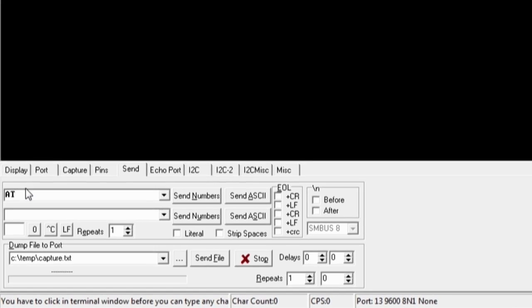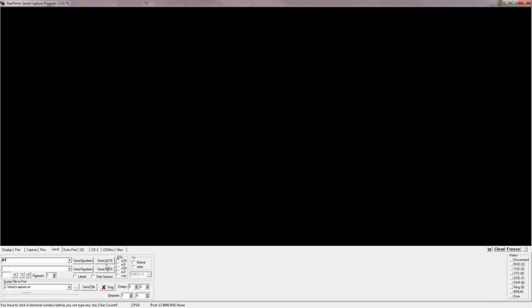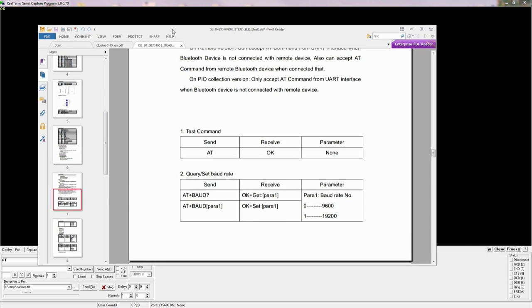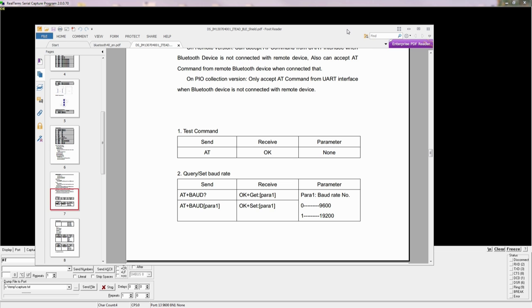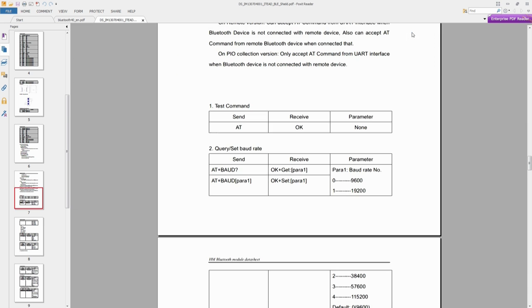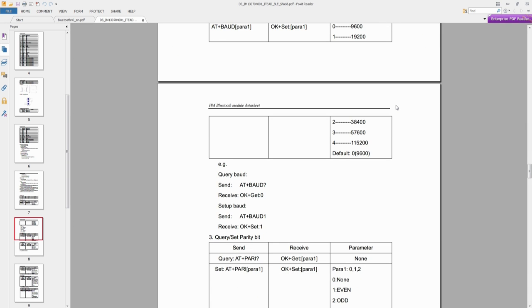What we send first to test if it's working at all is the AT command. AT and we get OK, so this was successful connection to our HM-10 module and we can check out the other AT commands that are listed in this data sheet.